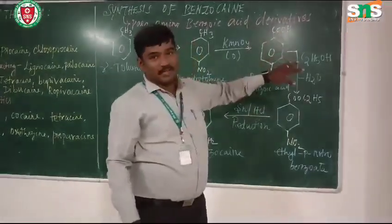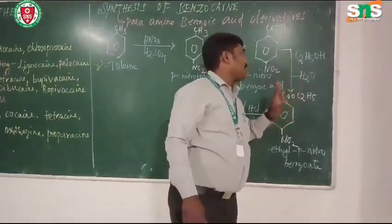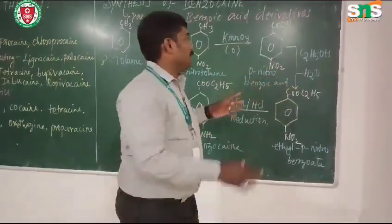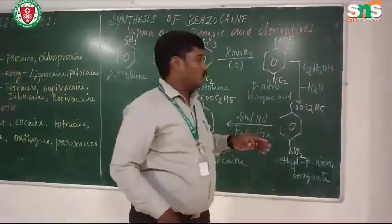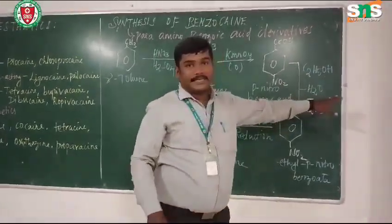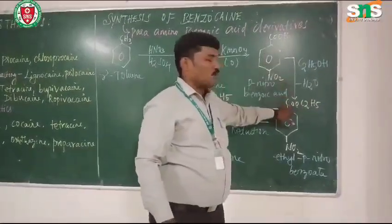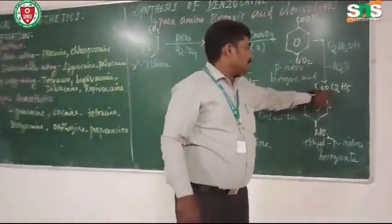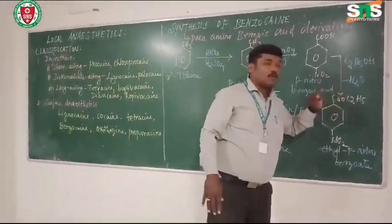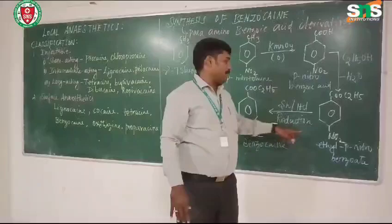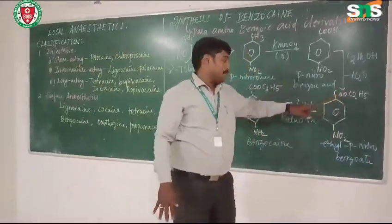Para-nitrobenzoic acid is further treated with alcohol, that is ethanol C2H5OH. The hydroxyl group is eliminated as water, and COOH is converted into COOC2H5. This gives ethyl para-nitrobenzoate. The nitro group is still present and COOC2H5 is present in the structure.